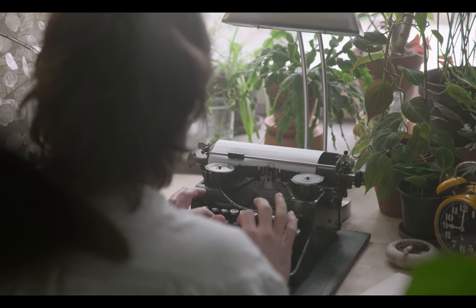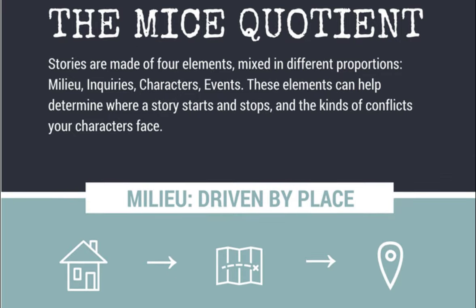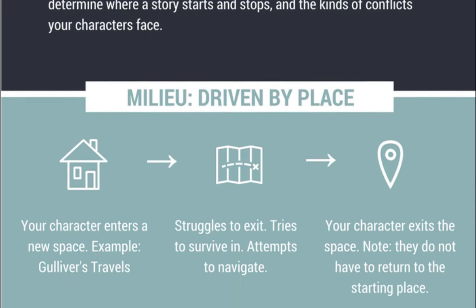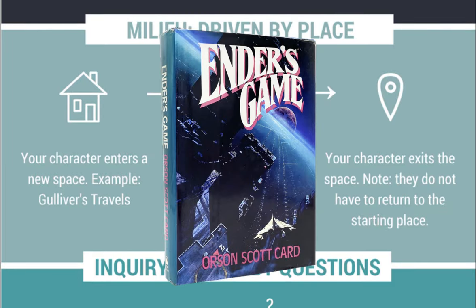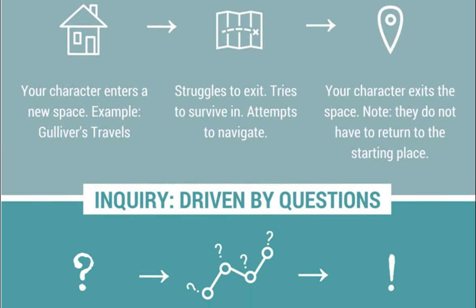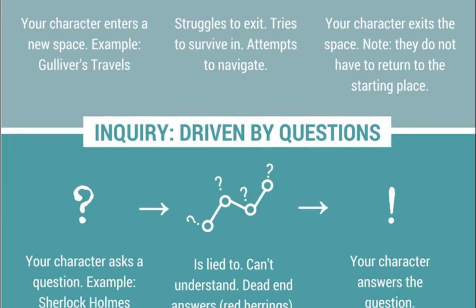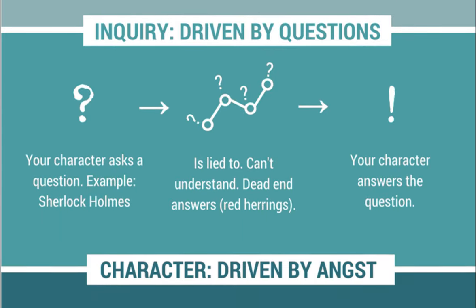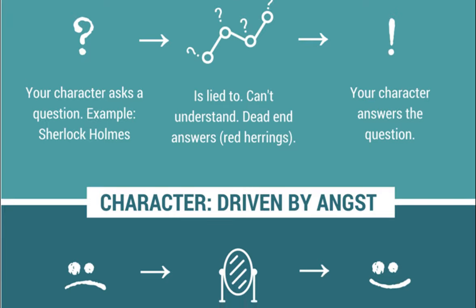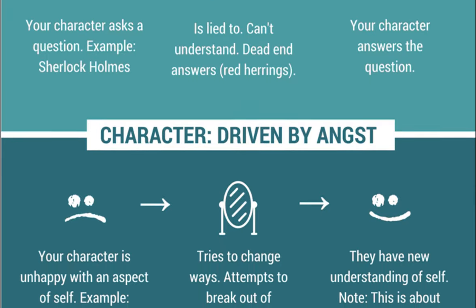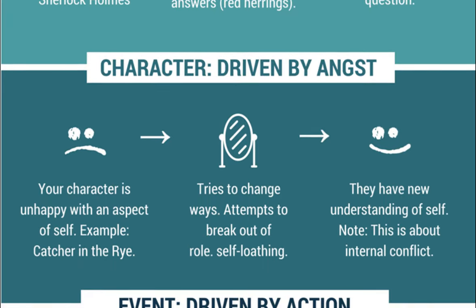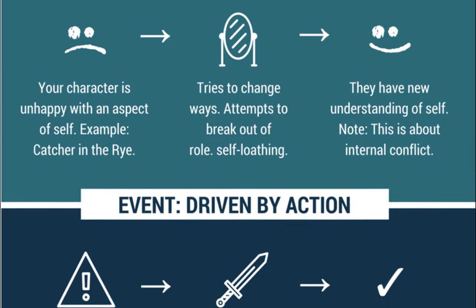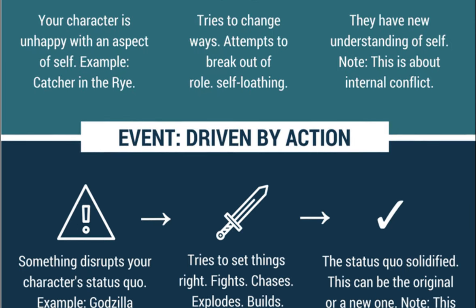So first off, what the heck is the MICE Quotient anyway? Orson Scott Card, the Ender's Game guy, describes this as the different themes within a story that the characters experience. MICE is an acronym for the four major themes — though I am bending them a little to better suit role-playing games. The themes are Milieu, Inquiry, Character, and Event.